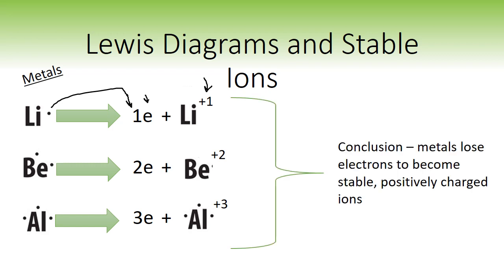Metals lose electrons to become stable positively charged ions, and the catchy name for that is cations. The way to remember it is this T here kind of looks like a big plus sign - plus for positive ions.